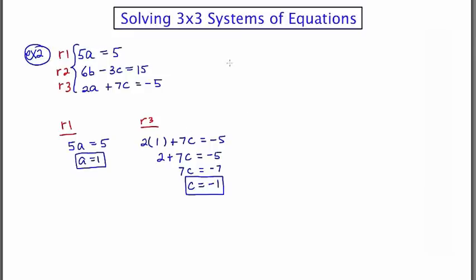So now, let's go to row 2 and plug in what we know. 6b minus 3 times c is equal to 15. We just figured c out and c turned out to be negative 1. So now, we have 6b plus 3 is equal to 15. Subtracting 3 from both sides, we get 6b is equal to 12, and b is equal to 2.